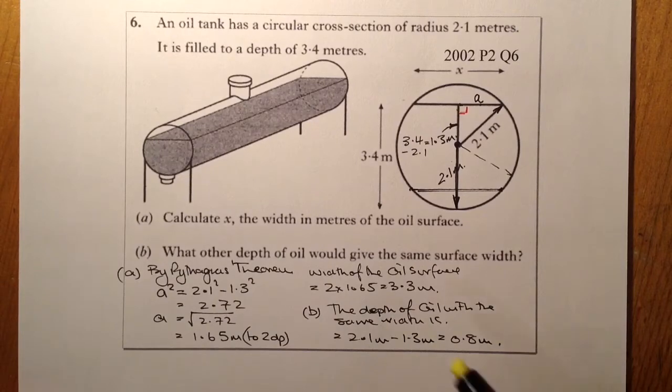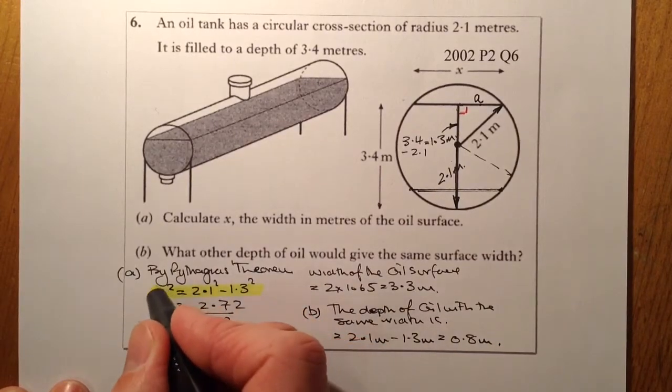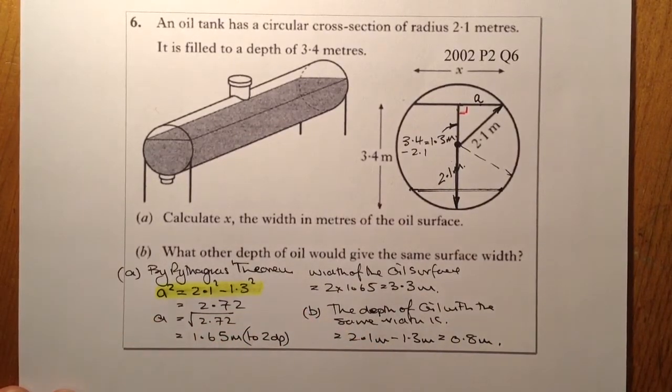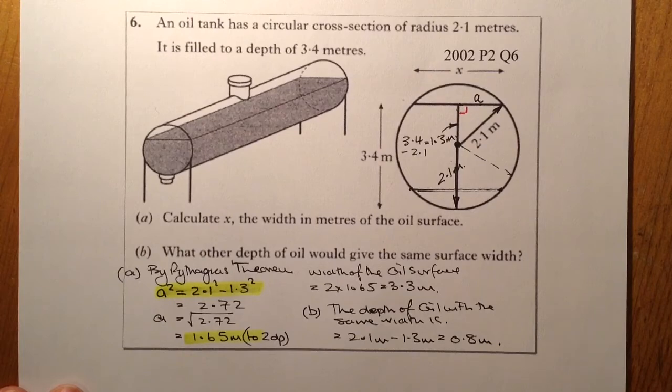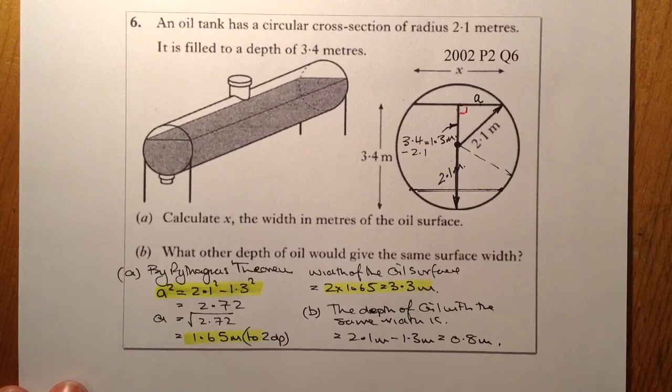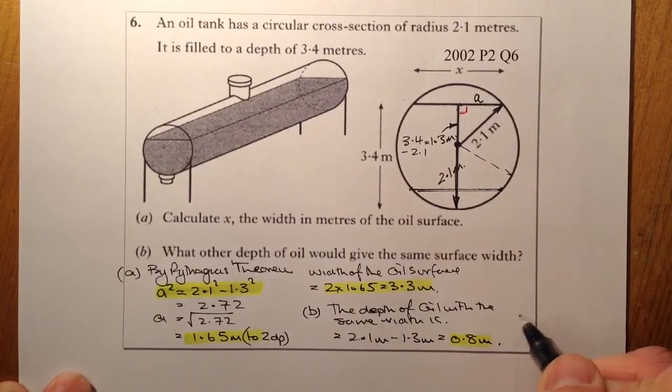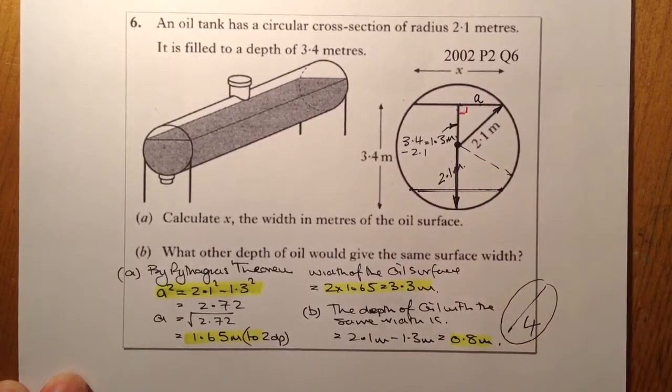Marks for this one here. We've got three marks for part A. So I'll get one mark for setting up the Pythagoras equation correctly there. I'll then get one mark for working that through and getting 1.65 metres. And then one mark for doubling it and getting 3.3 metres for the value of x. One mark for getting the 0.8 metres there. So three marks for part A, one mark for part B. The question there, four marks.